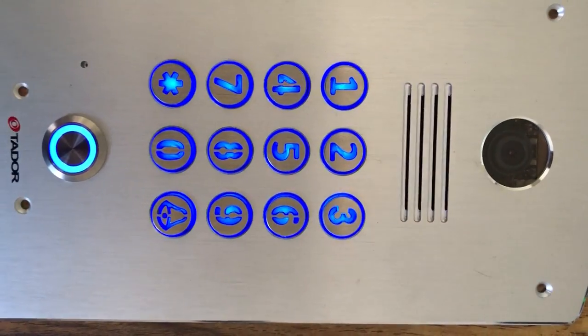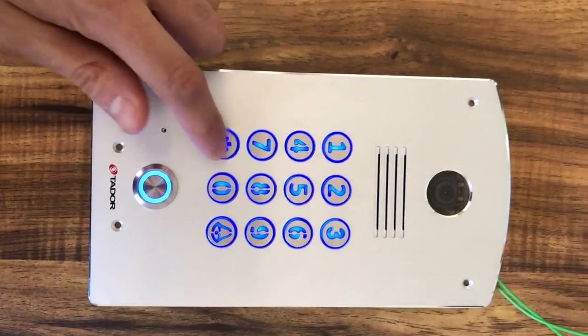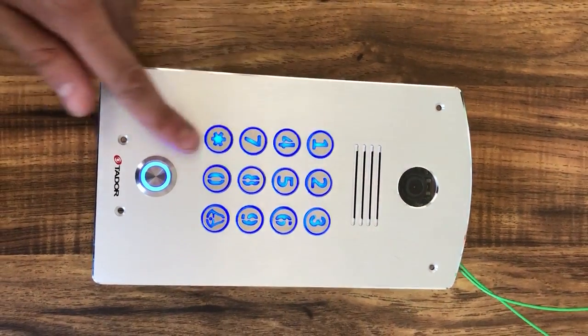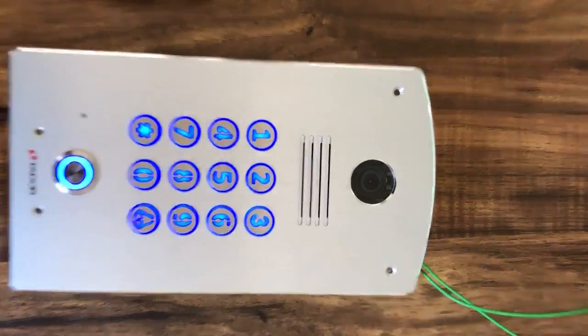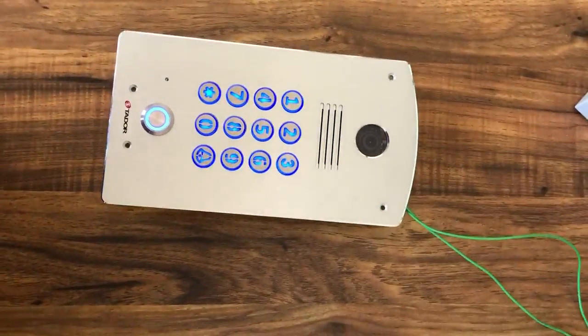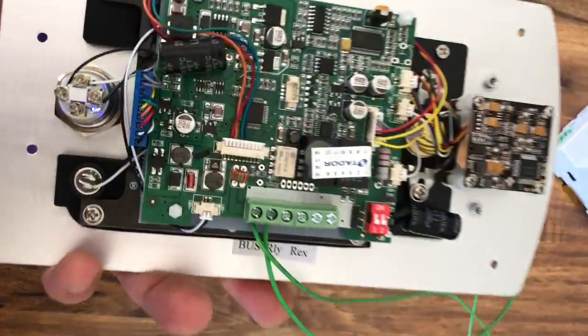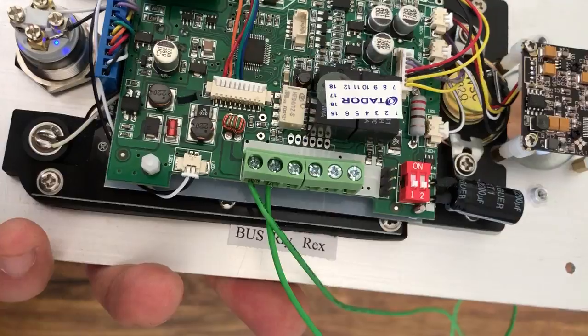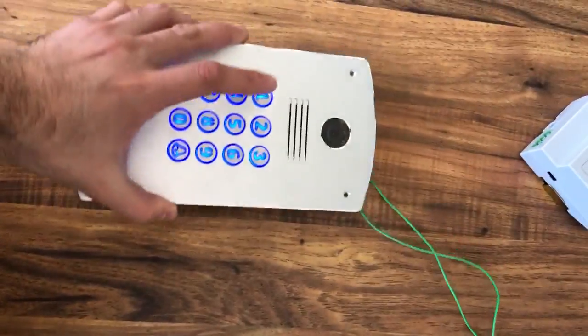The keypad has rounded keys. Very nice touch, feels good. The button is anti-vandal and we have a white camera. Now, the panel is connected by two wires. You can see two wires going outside and all the system running on two wires.